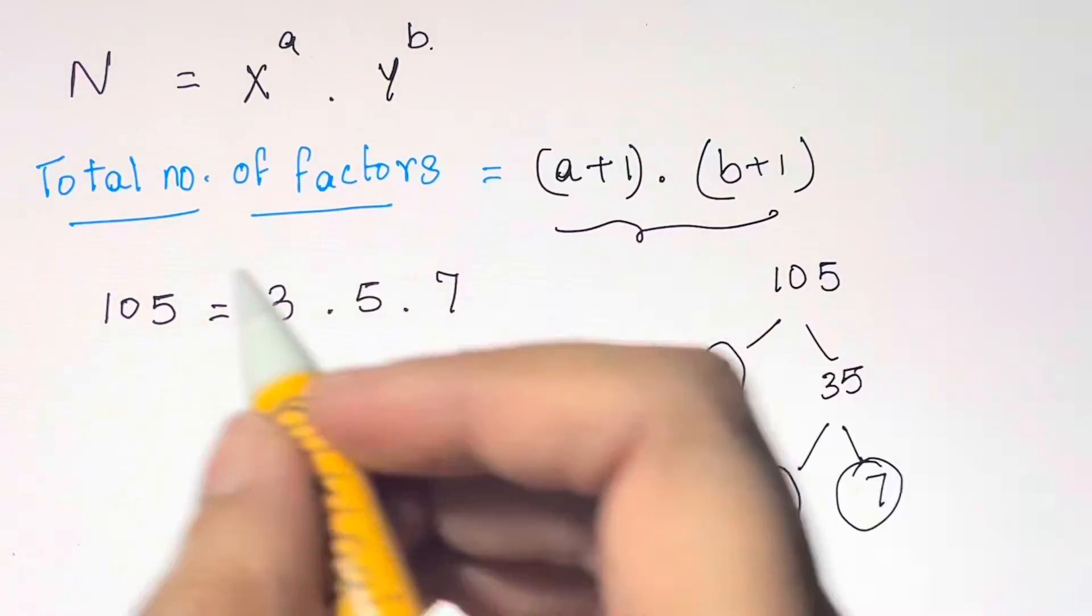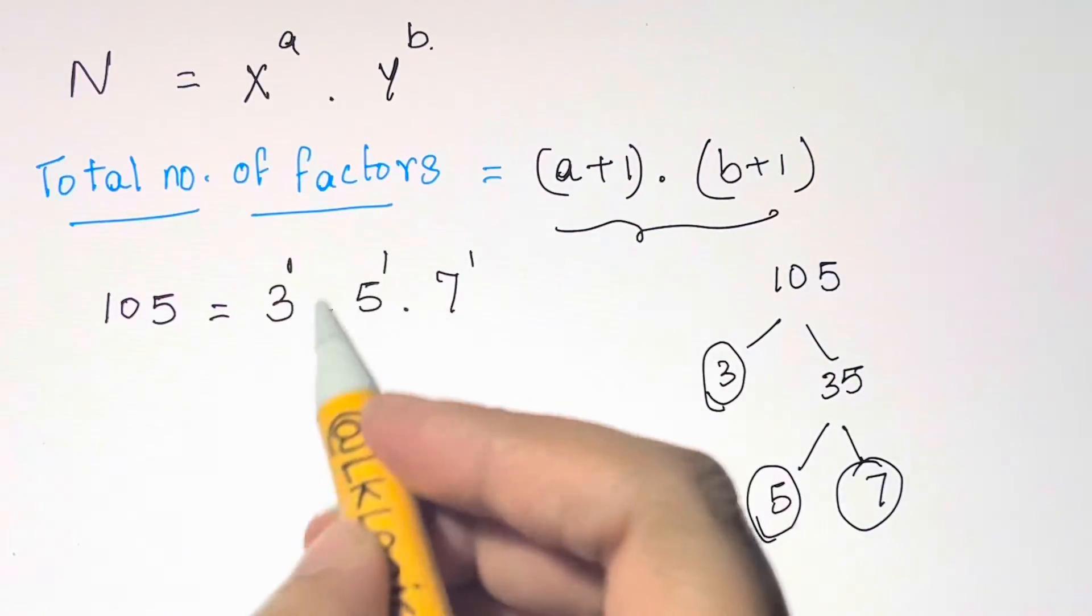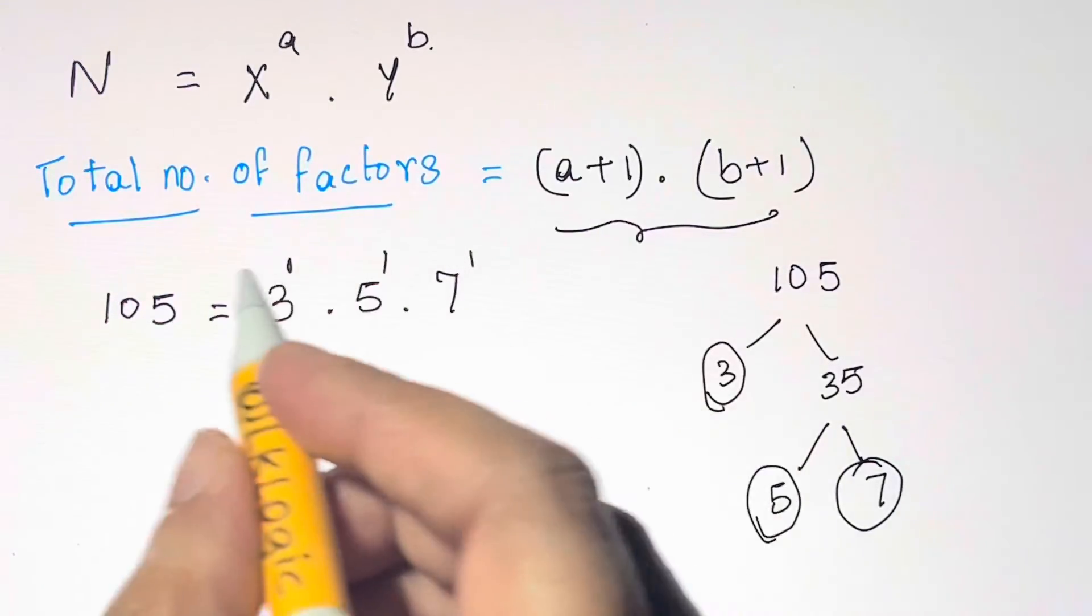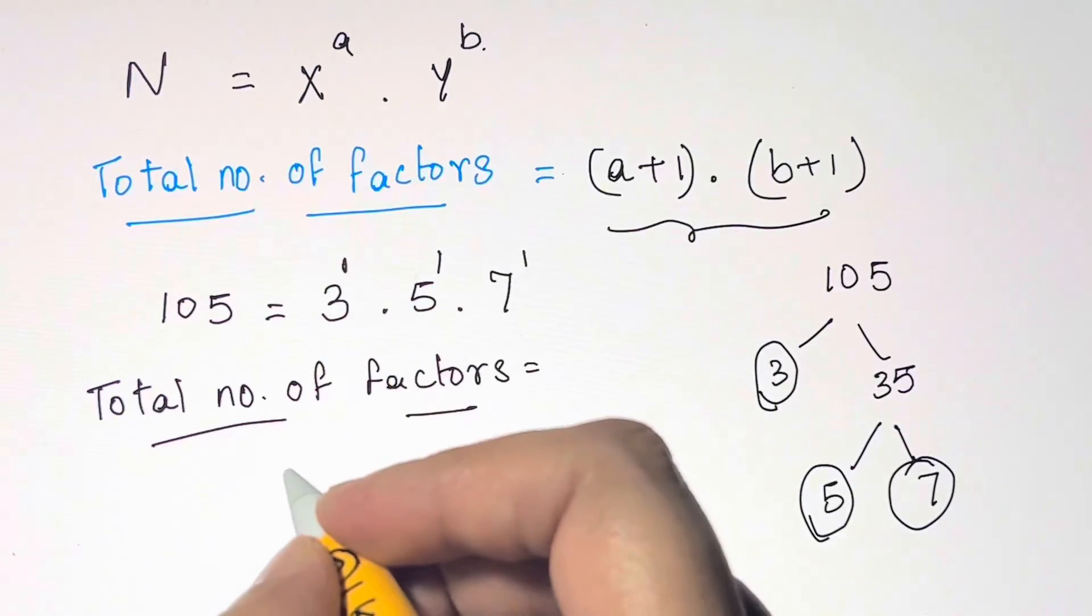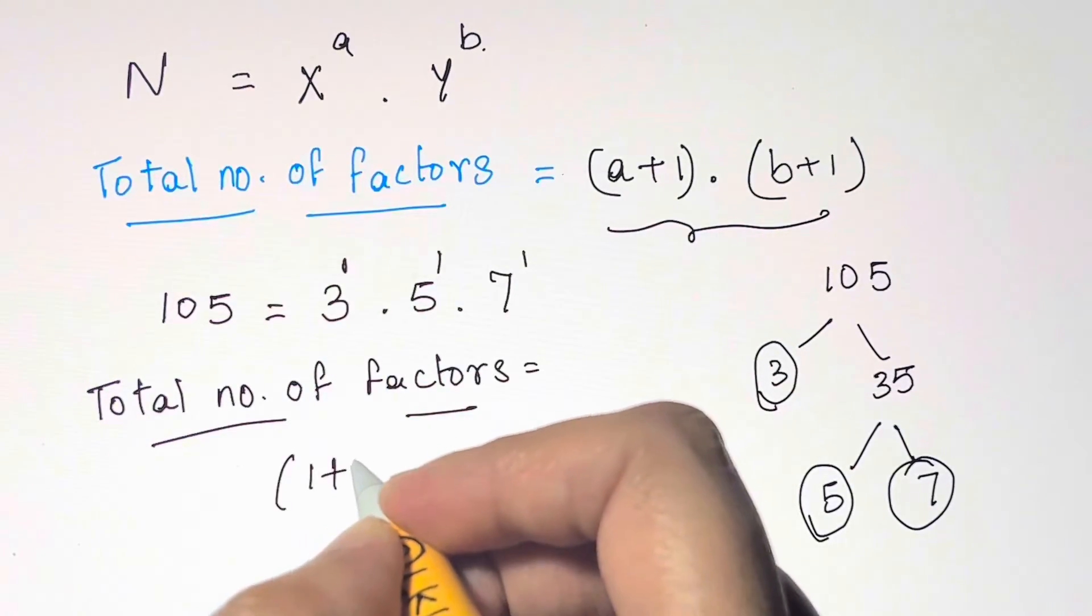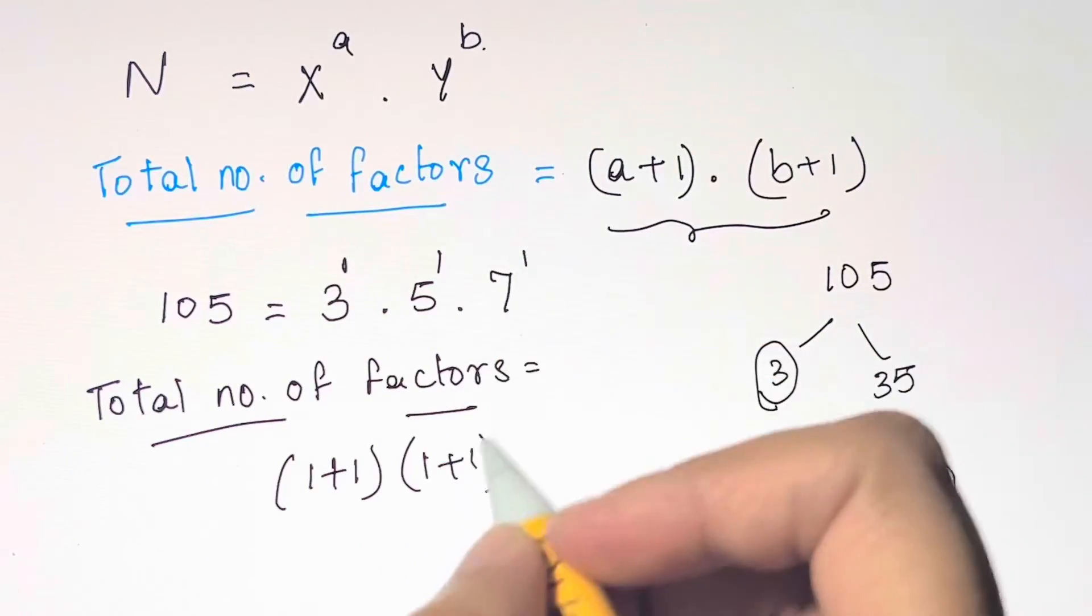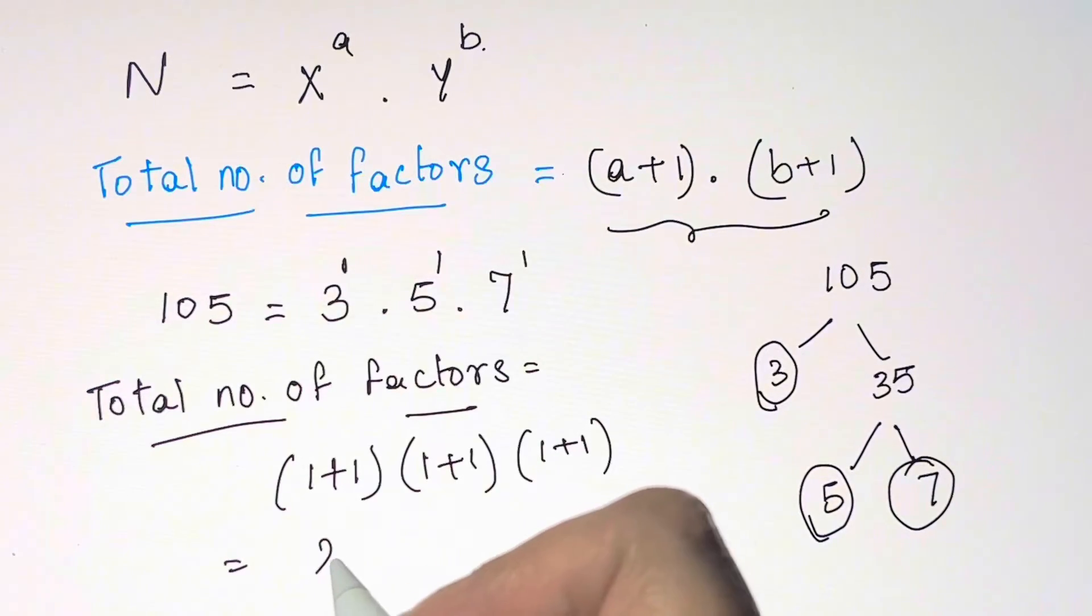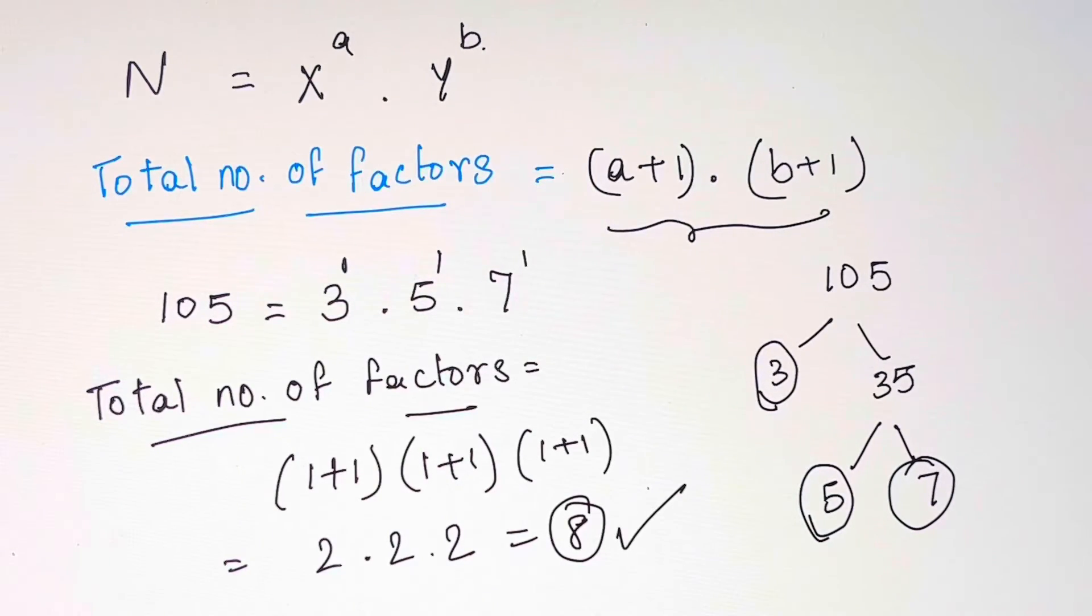And what's the power? We have only one 3, one 5, and one 7. So the exponents are all 1. It's in the form of x to the a times y to the b. So total number of factors will be: take the exponent 1 and add 1 to that. Then take another exponent 1 and add 1 to that. Take another exponent 1 and add 1 to that. So 1 plus 1 is 2 times 2 times 2, which is equal to 8. So we have total 8 factors of 105.